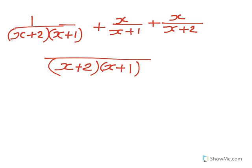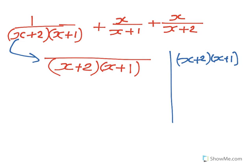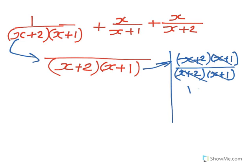Now, for the first fraction: take the common denominator (x plus 2)(x plus 1) divided by the first fraction's denominator (x plus 2)(x plus 1). This cancels to give 1, and multiplying by the numerator 1 gives 1. So the first numerator is 1.